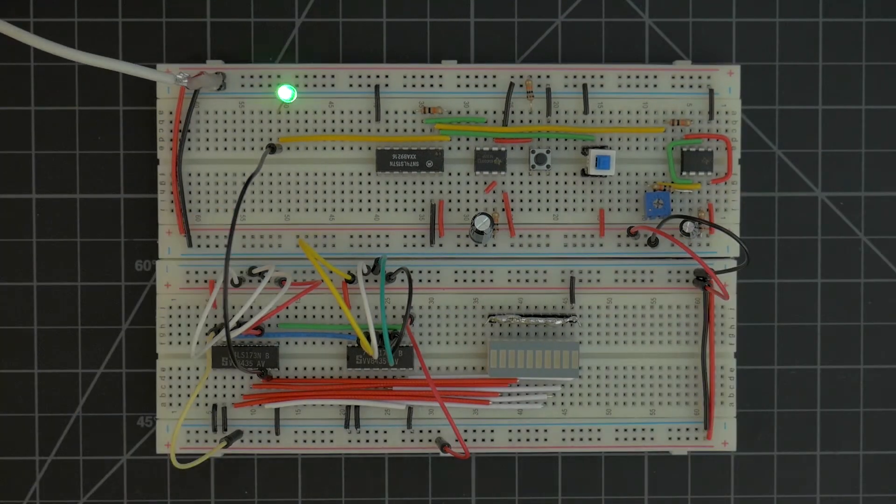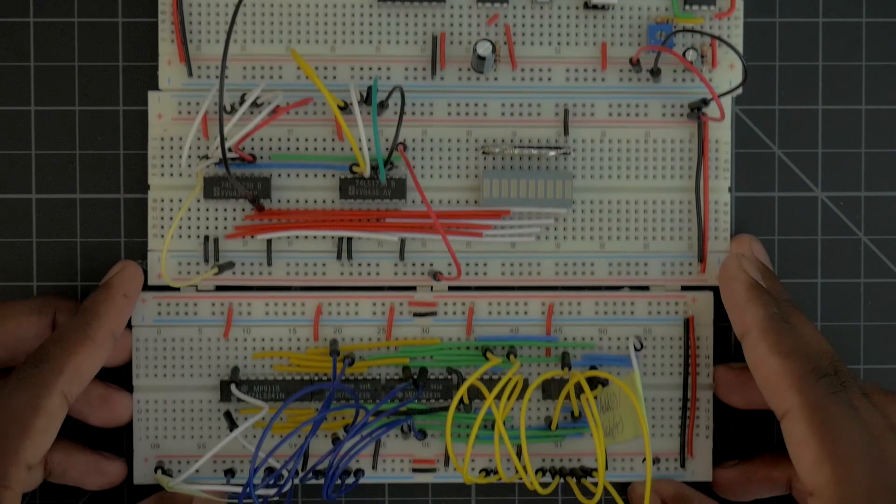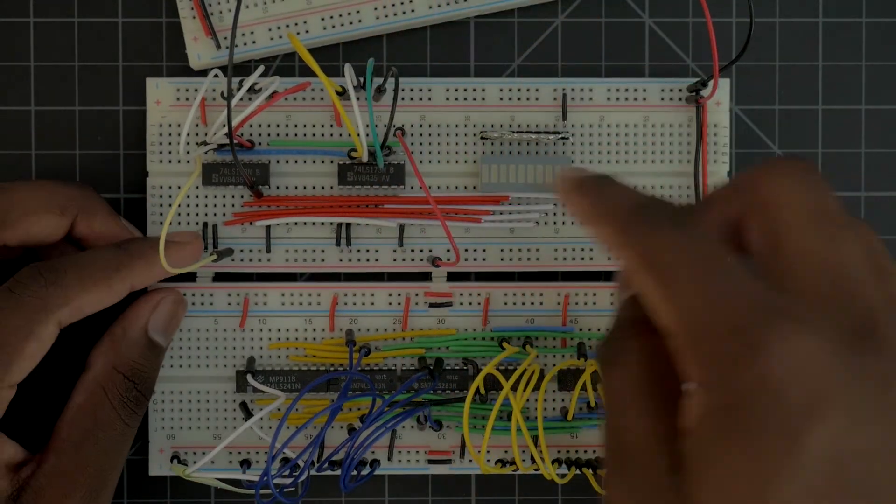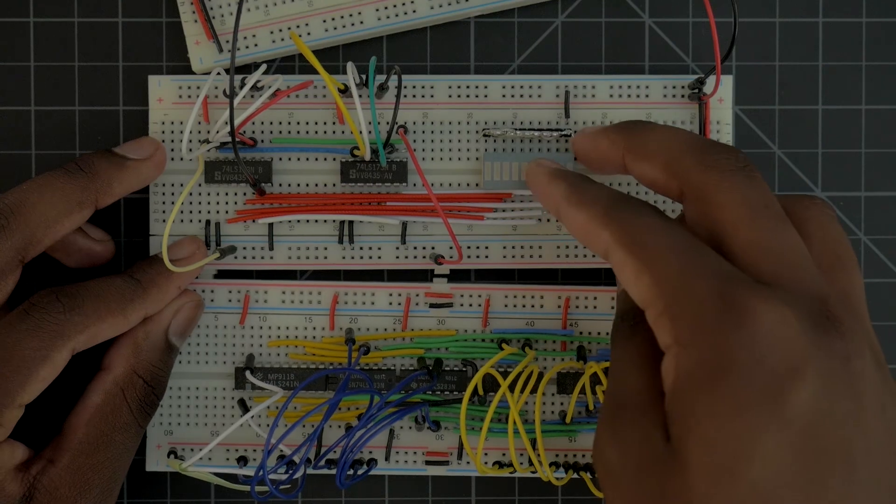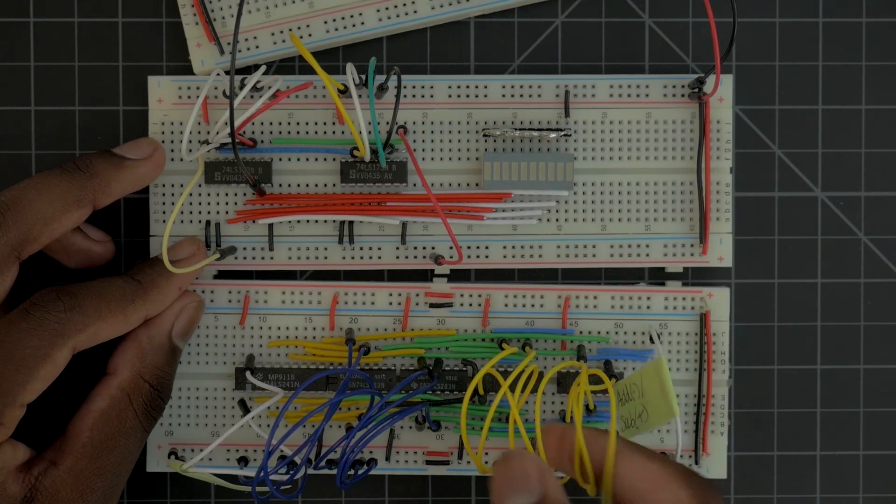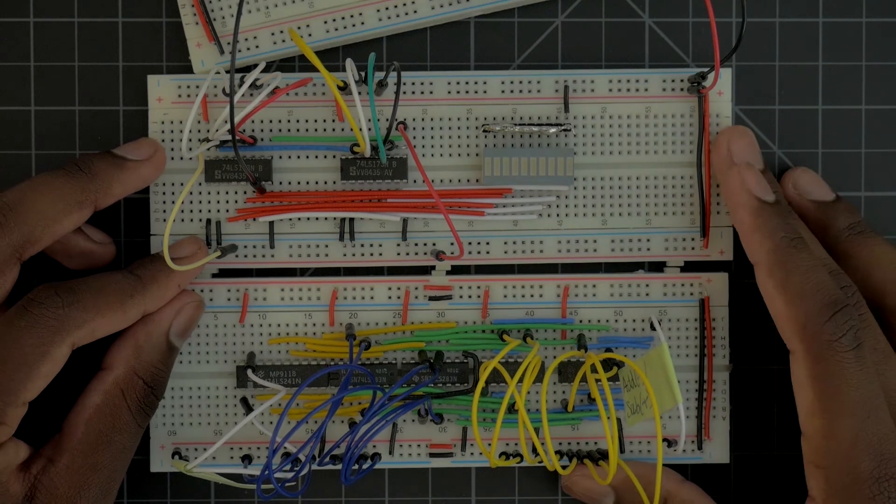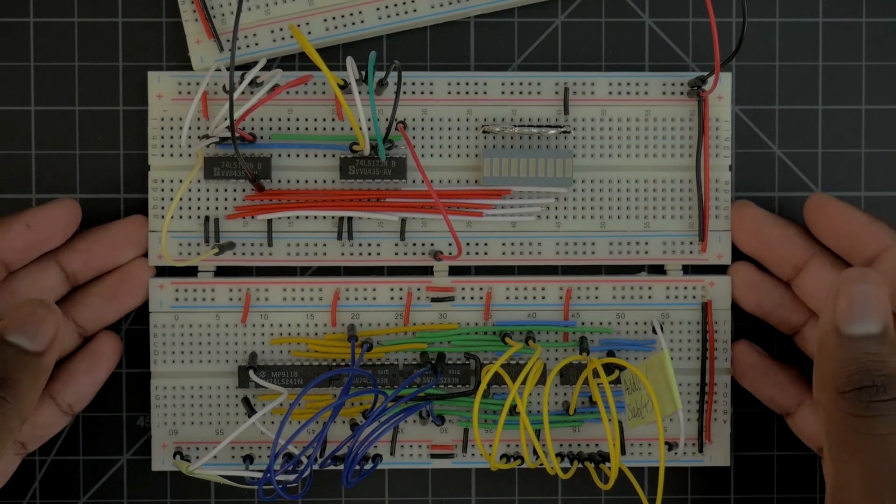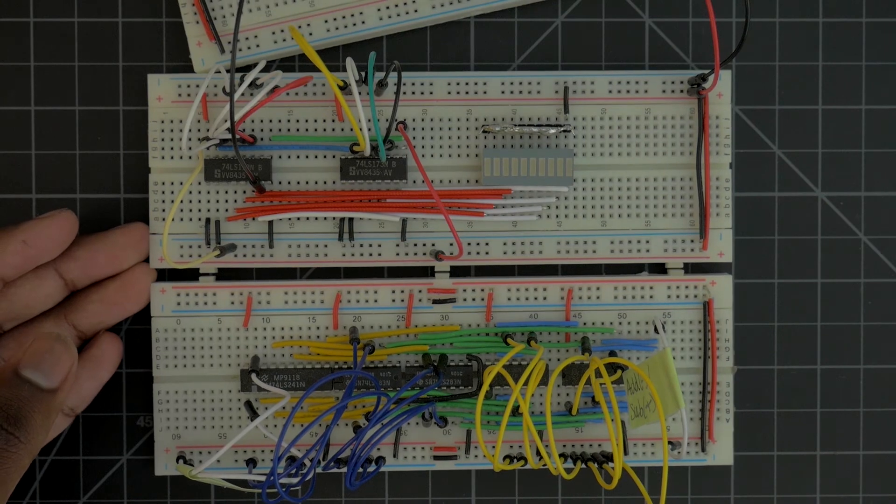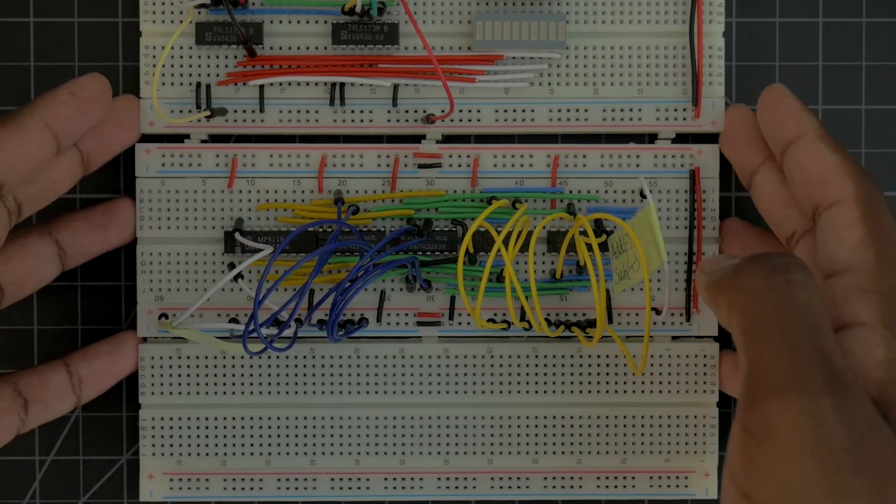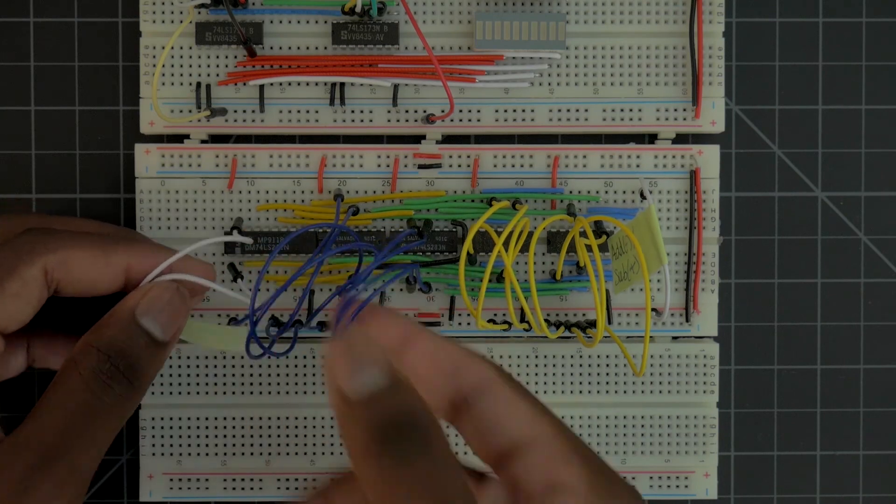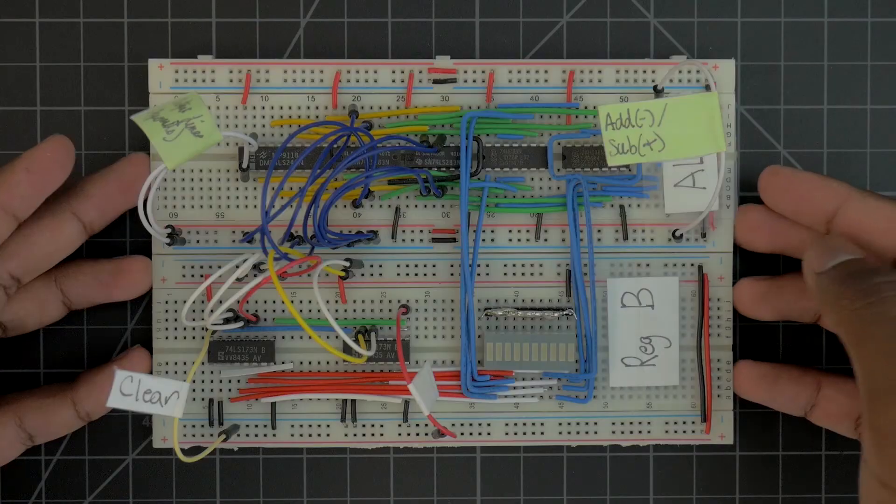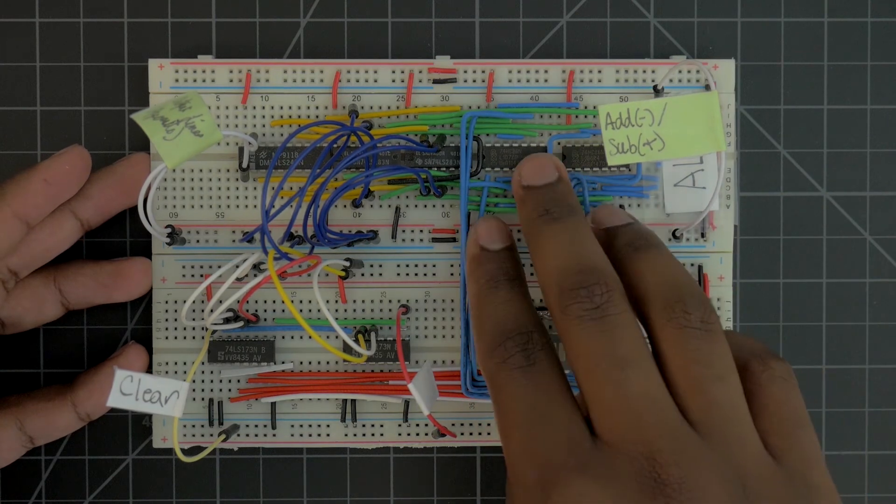So the next step would be to take this register and connect it up to something like our ALU, where this could represent, where this value here could represent the B value. And we connect that up to these yellow wires here. And we can get our ALU module just that much closer to being done. And then of course we'd have to build another one. So we take another one and connect it up here for the A value, and then we connect it to these blue wires. And then we'd have a register for both values of the ALU.